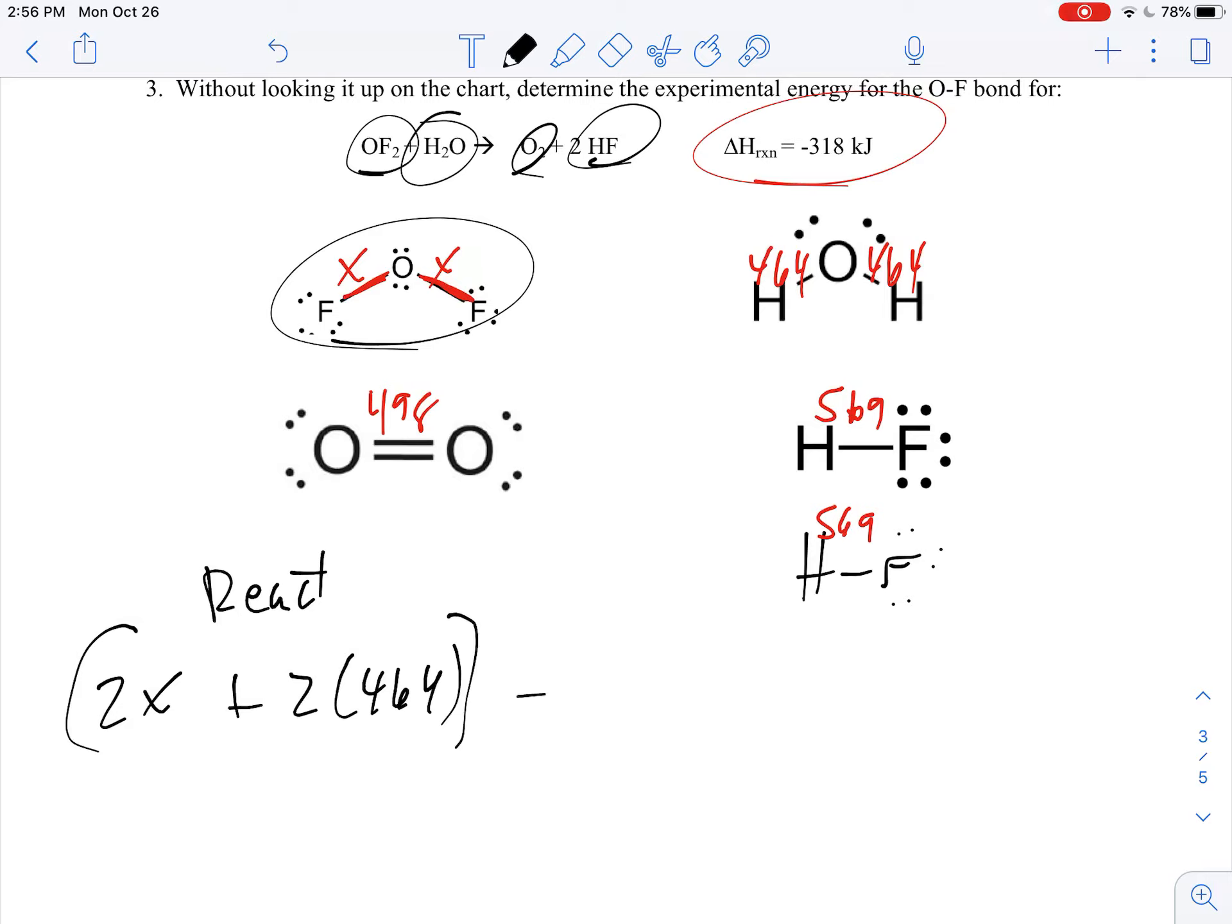And then we're going to subtract from that your products which is 498 plus 2 times 569, and then all of that goes together to equal your answer which is negative 318.